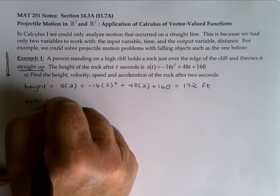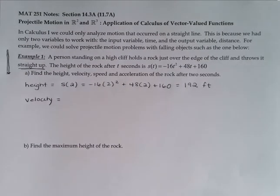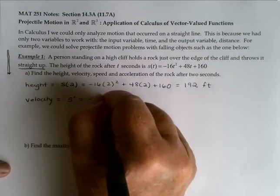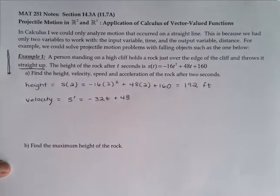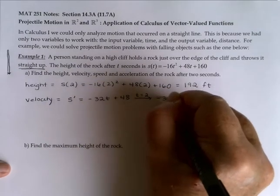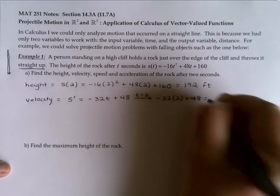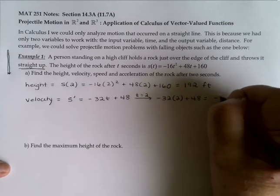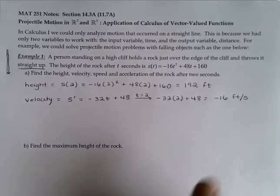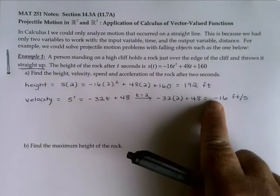Velocity — I suspect that one of the things you studied in Calc 1 is the fact that the derivative of your position or height function is your velocity. So this is going to be s prime: negative 32t plus 48. If I plug t equal to 2 into that, negative 64 plus 48 is negative 16, and that would be in feet per second. The fact that velocity is negative tells us we're coming downward.